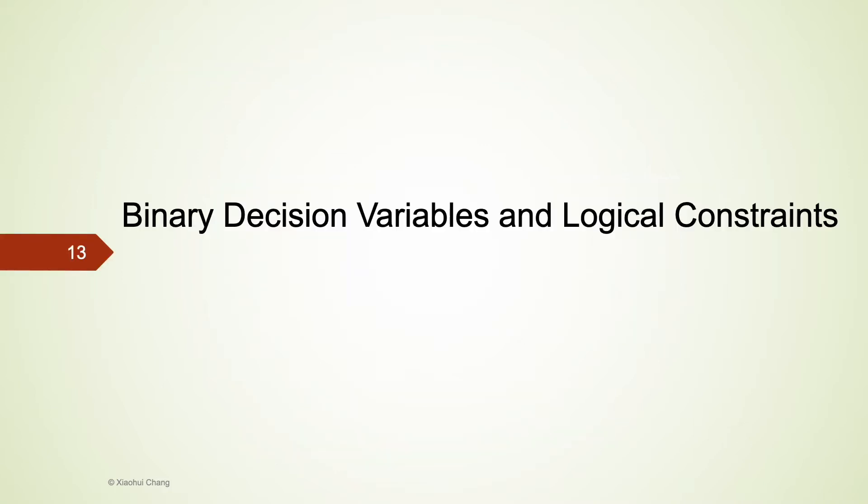In the second part of this video, I will discuss a special kind of integer decision variables that only takes two values, 0 or 1. They are called binary decision variables. This type of variables are particularly useful when we make yes or no decisions. We will also discuss a set of constraints that are frequently associated with binary decision variables that are called logical constraints. Let's begin.